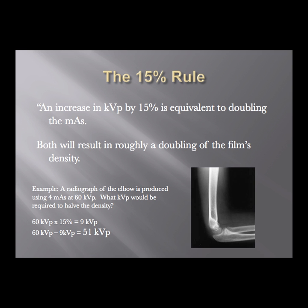When we talk about the 15% rule, it only takes an increase in KVP of 15% to essentially double the density. The 15% rule states that an increase in KVP by 15% is equivalent to doubling the mAs. So if you want to double your density, you have two choices: double your mAs, or increase your KVP by 15%. However, you have to be careful when making changes in KVP because it's also the controlling factor for contrast — you may succeed in changing density but pay a price in contrast.